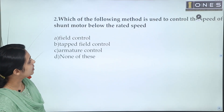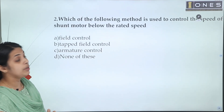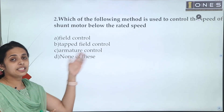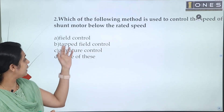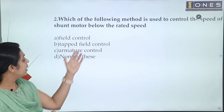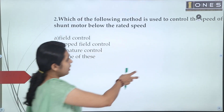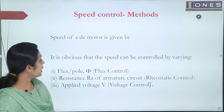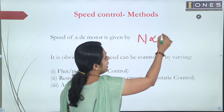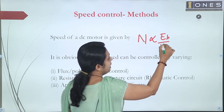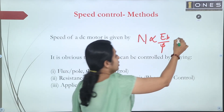Next question: Which of the following methods is used to control the speed of a shunt motor below the rated speed? Options are: field control, tapped field control, armature control. For a DC motor, speed N is directly proportional to Eb divided by flux, where Eb equals V minus I_A R_A.